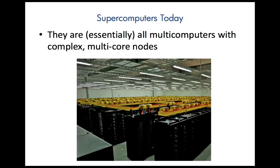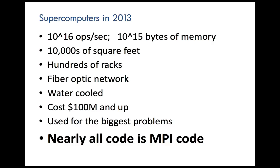What are supercomputers like today? The reason to learn MPI programming is to deal with large-scale computation and challenge difficult problems in computational science on supercomputers. Today, essentially all supercomputers are multicomputers with complex multicore nodes. Pictured is the Sequoia machine, an IBM machine at Lawrence Livermore National Lab — you see many racks, each containing many multicore nodes, with yellow cabling structures on top for the network. These machines are capable of 10 petaflops — that's 10 to the 16th floating point operations per second.